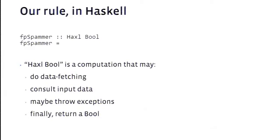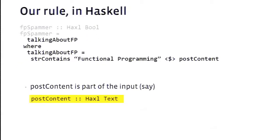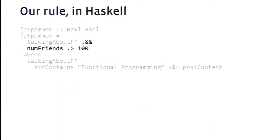We write a rule called fp_spammer and its type is Haxl Bool. A Haxl Bool is a computation — as opposed to a simple Bool — that can fetch data from storage services, consult input data such as post content, throw exceptions, and eventually return a Bool. The first condition checks whether the user is talking about functional programming: fp_spammer is defined as talking_about_fp, which checks whether the string contains 'functional programming' applied to the post content. Post content is itself a computation returning Text, and the fmap operator applies a pure function on the left to a computation on the right.